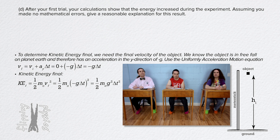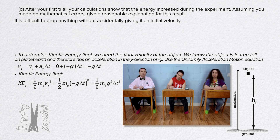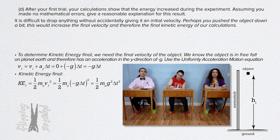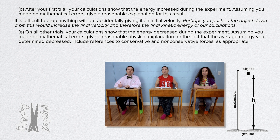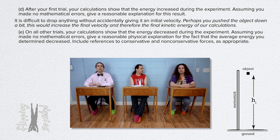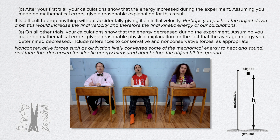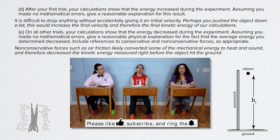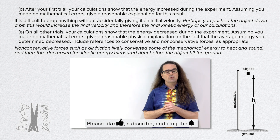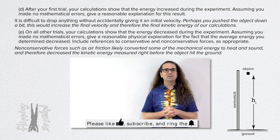Part D is about giving an explanation for why we could see an increase in energy: it is difficult to drop anything without accidentally giving it an initial velocity. Part E is about giving an explanation for why we could see a decrease in energy: non-conservative forces such as air friction likely converted some of the mechanical energy to heat and sound and therefore decreased the kinetic energy measured right before the object hits the ground. That completes Parts A through E. Very nice, Bo — thank you very much for learning with me today.